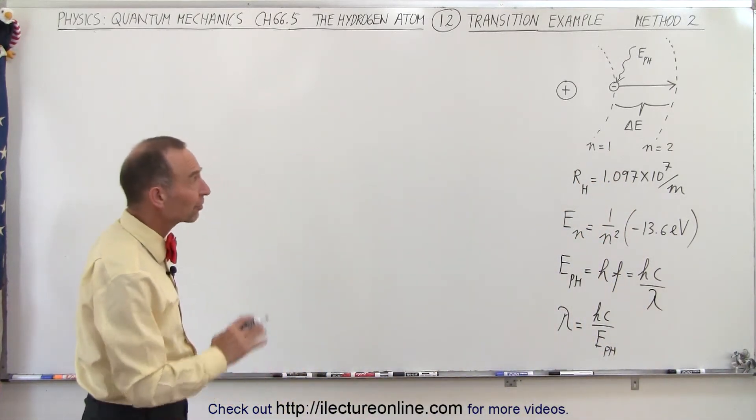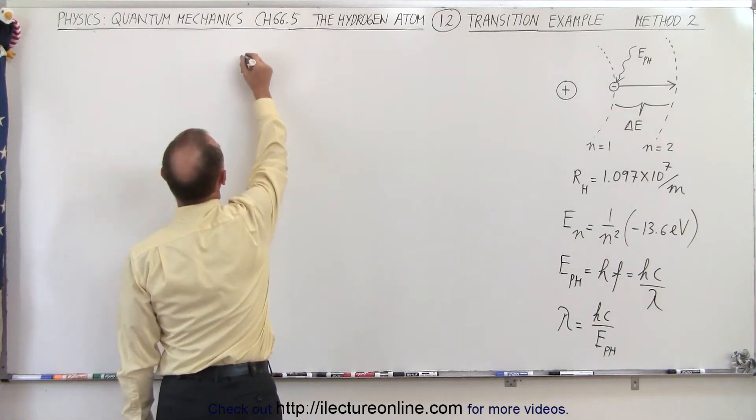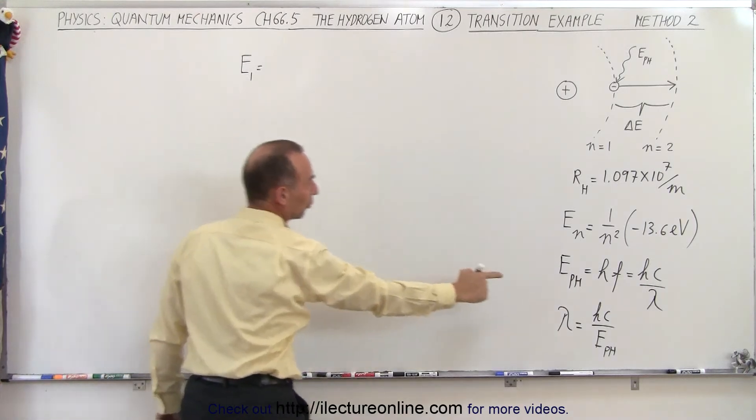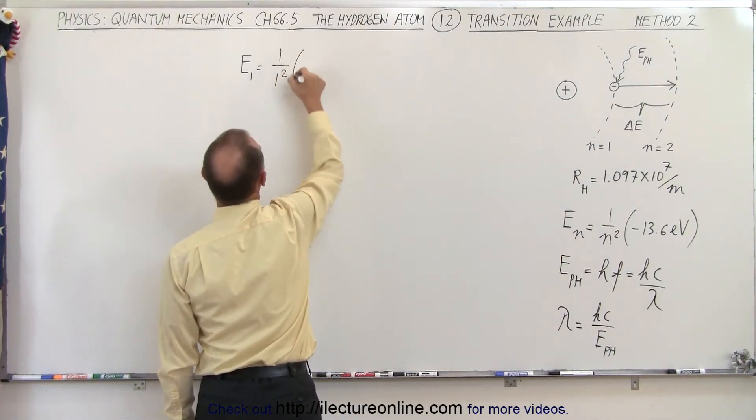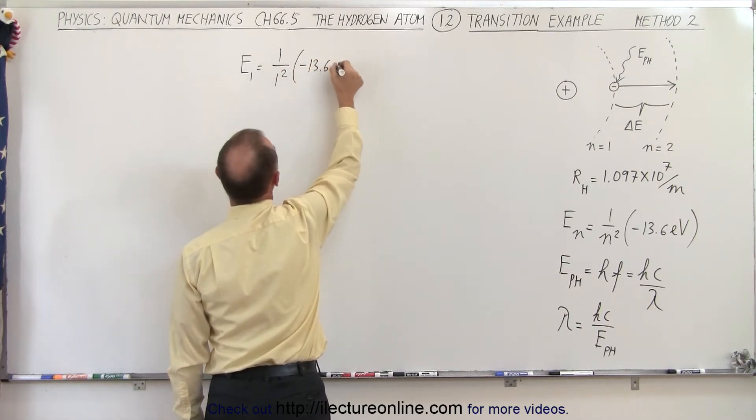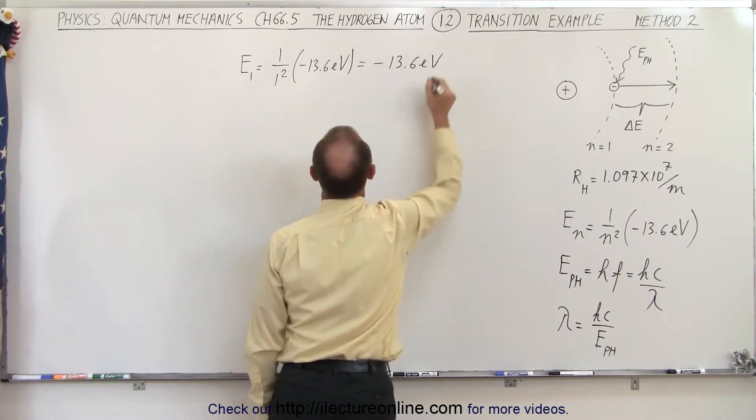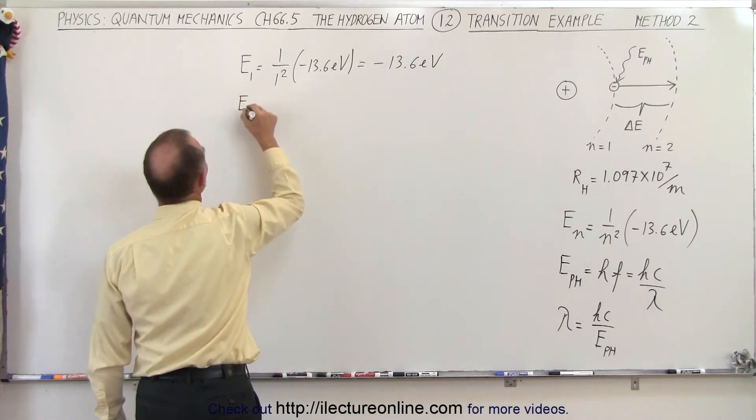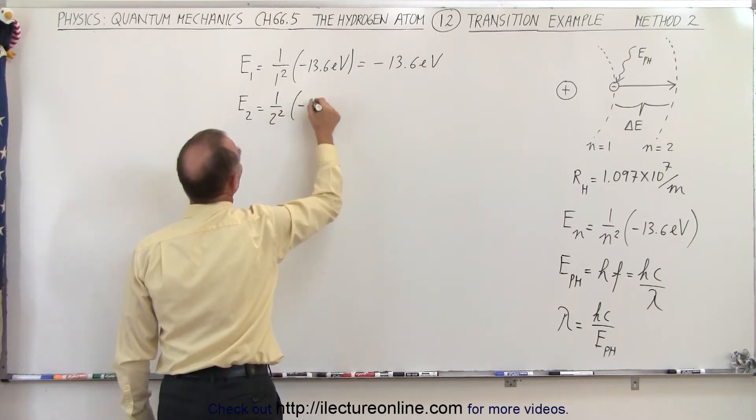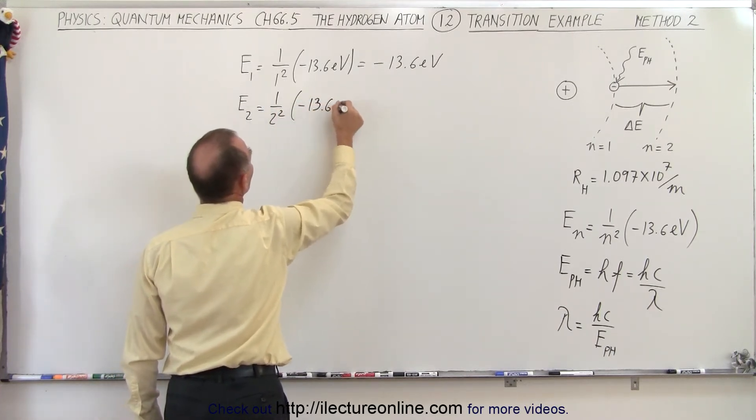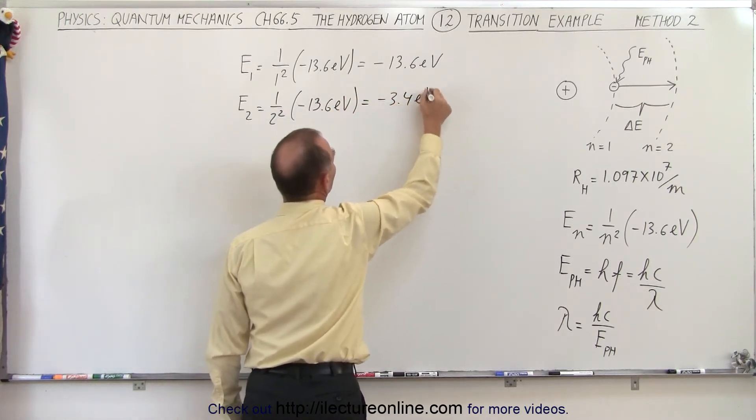So what we're going to do here is calculate the energy of the various levels. So the energy of the first level is going to be equal to, using our equation right here, 1 over 1 squared times minus 13.6 electron volts, which is equal to minus 13.6 electron volts. The energy of the second level is 1 over 2 squared times minus 13.6 electron volts, which is equal to minus 3.4 electron volts.